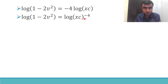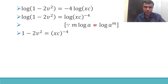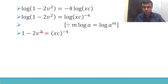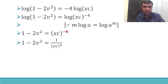Now sending the 4 and the minus sign over: I get minus 1/4 times log(1 minus 2v²) equals log(xC). In logarithms, a number in front can go to the power, so I get log(1 minus 2v²) equals log(xC) to the power minus 4. Since both sides are logs of something, I can equate them: (1 minus 2v²) equals (xC) to the power minus 4.